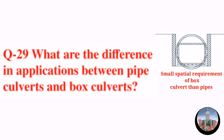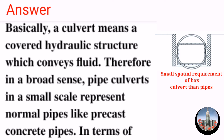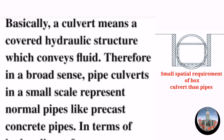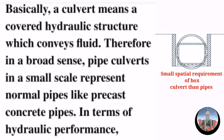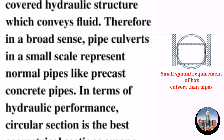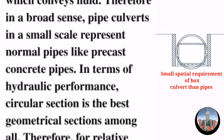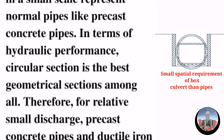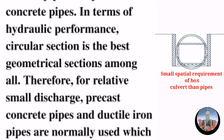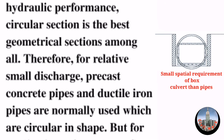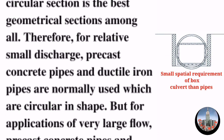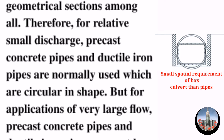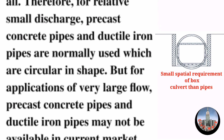Question number 29: what are the differences in applications between pipe culverts and box culverts? A culvert is a covered hydraulic structure which conveys flow. In a broad sense, pipe culverts on a small scale represent normal pipes, like precast concrete pipes. In terms of hydraulic performance, a circular section is the best geometrical section among all. Therefore, for relatively small discharge, precast concrete pipes and ductile iron pipes, which are circular in shape, are normally used.